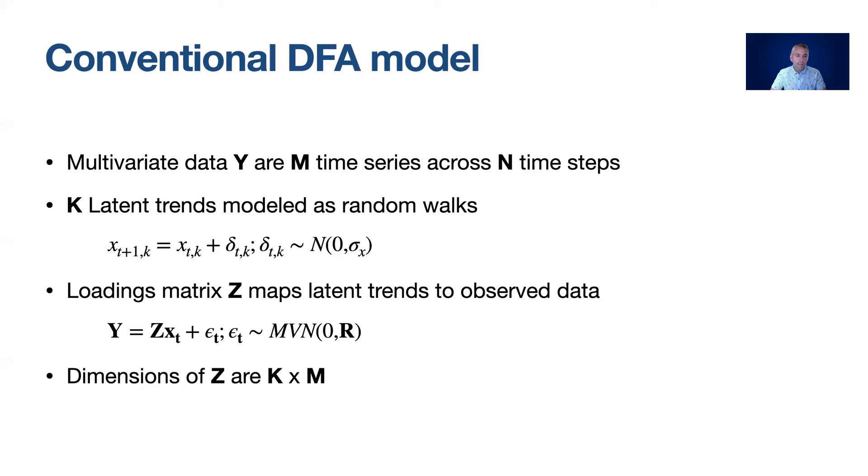In the past this has been thought of as a multivariate time series problem where for each of the latent trends between 1 and k we can estimate those trends as latent random walks. In addition to those latent trends we can estimate a loadings matrix Z. Z is important because it maps those latent trends to our observed data.